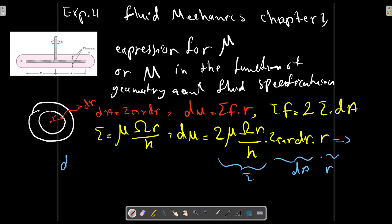So dm equals 4π μ omega r^4 over h dr. So m equals the integration of 4π μ omega r^4 over h dr.